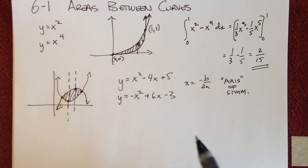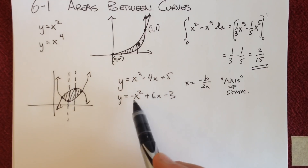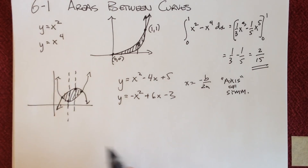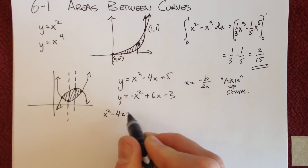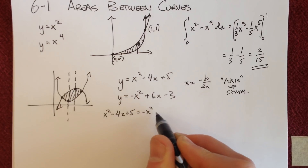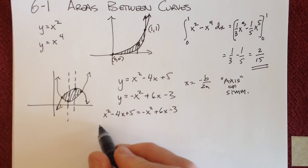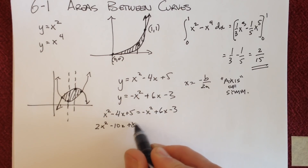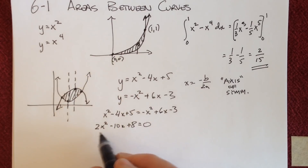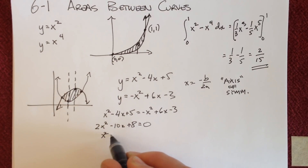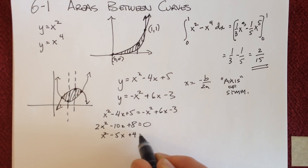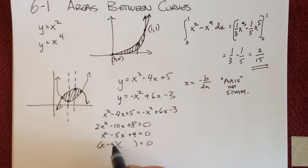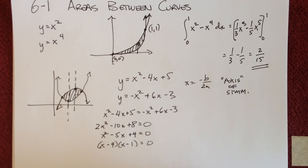We need to find the intersection points by setting the two equations equal. We get x squared minus 4x plus 5 equals negative x squared plus 6x minus 3. Shoving everything to one side gives 2x squared minus 10x plus 8 equals 0. Taking out a 2 gives x squared minus 5x plus 4 equals 0, which factors very easily as (x minus 4)(x minus 1). If it didn't factor, we'd use the quadratic formula.